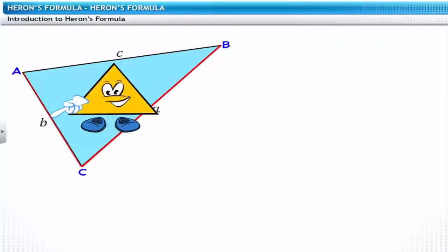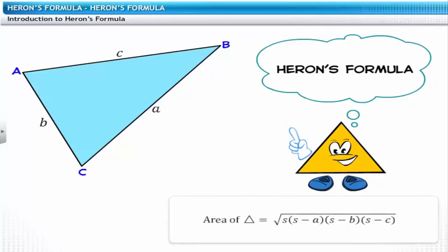When you know only the lengths of the sides of a triangle, we use Heron's or Hero's formula to calculate the area.